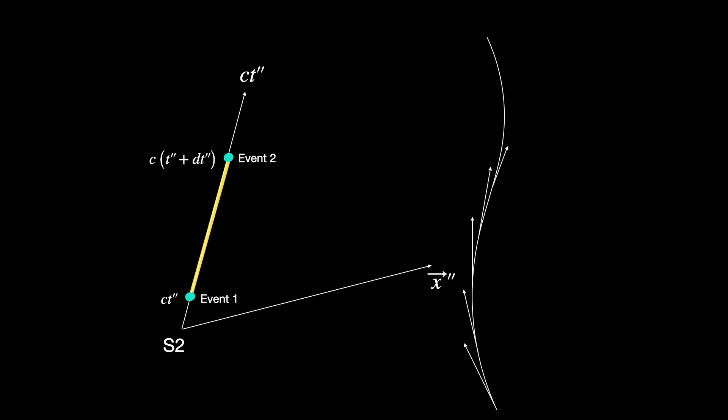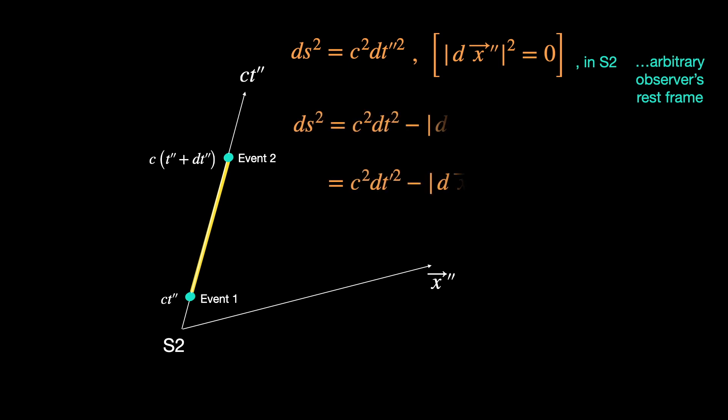So, to him, these two events appear to occur at the same spatial coordinate location in S2 frame. Only his clock kept ticking between the two events. So, he sees the two events occur one after the other only separated by time. So, what observers like us in S0 or S1 frame see as a combo pack of spatial length and time elapsed, he sees as a pure time duration. But so far, we have been discussing about timelike spacetime intervals only.